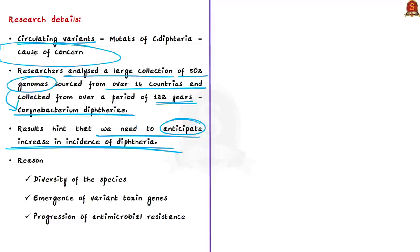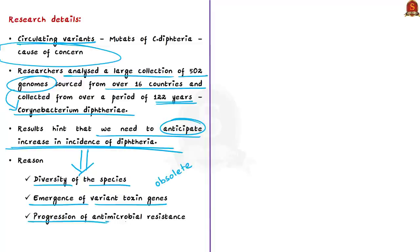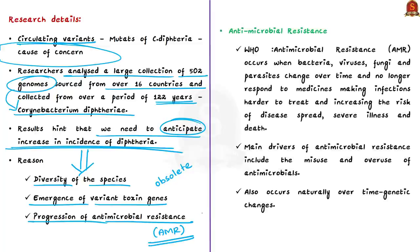The study states three reasons for anticipated increases in diphtheria incidence. First, there is diversity of the diphtheria bacterial species, meaning different disease-causing mechanisms can be anticipated. Second, emergence of variant toxin genes means existing anti-toxins may become obsolete or ineffective. Third, progression of antimicrobial resistance means existing antibiotics can do little to combat the disease if resistance occurs.